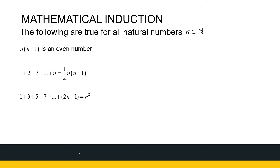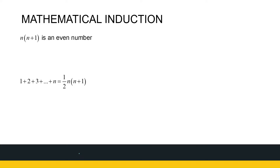The next statement: 1 plus 2 plus 3 all the way to plus n — there's a formula for calculating that. The third one, we've got all the odd numbers: 1 plus 3 plus 5 plus 7. If I add them together, I get n squared, depending on what I choose for n. We're saying these statements are true for all natural numbers, and we're looking at how to prove that.